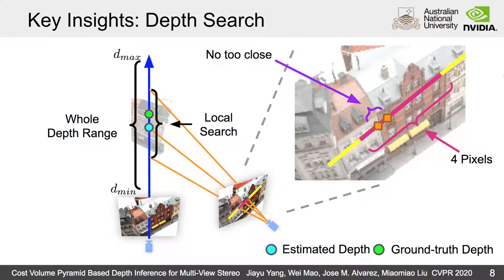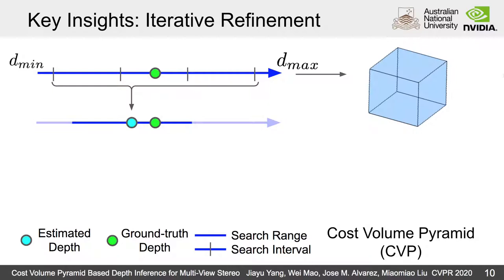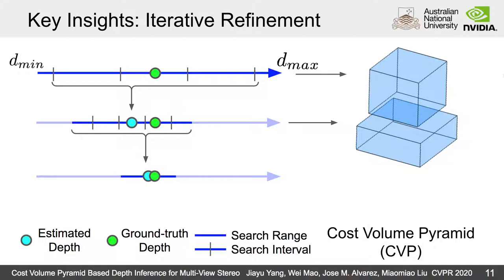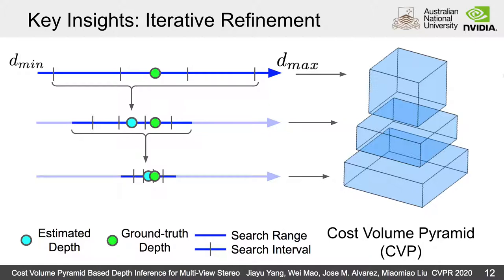To get a coarse depth estimation, we first search coarsely on the whole depth range using a coarse volume at very small spatial resolution. For each iteration afterwards, we increase the spatial resolution and build a partial coarse volume with the depth search range centered around the previous estimated depth, with a smaller searching interval, thus producing a more accurate depth map. Building a coarse volume pyramid in this way consumes less GPU memory and is also faster at runtime.